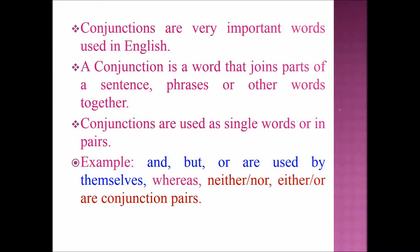Conjunctions are very important words used in English. A conjunction is a word that joins parts of a sentence — phrases or other words together. Conjunctions are used as single words or in pairs. For example, 'and', 'but', 'or' are used by themselves, whereas 'neither/nor' and 'either/or' are conjunction pairs.